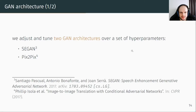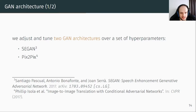Loss A allows the generator to know if it has deceived the discriminator. Loss B allows the generator to know if the generated data is more or less similar to the data in domain B. We evaluated two GAN architectures over a set of hyperparameters: CGAN, which was designed for speech and audio waveform denoising, and Pix2Pix, designed in the context of image translation with paired datasets.